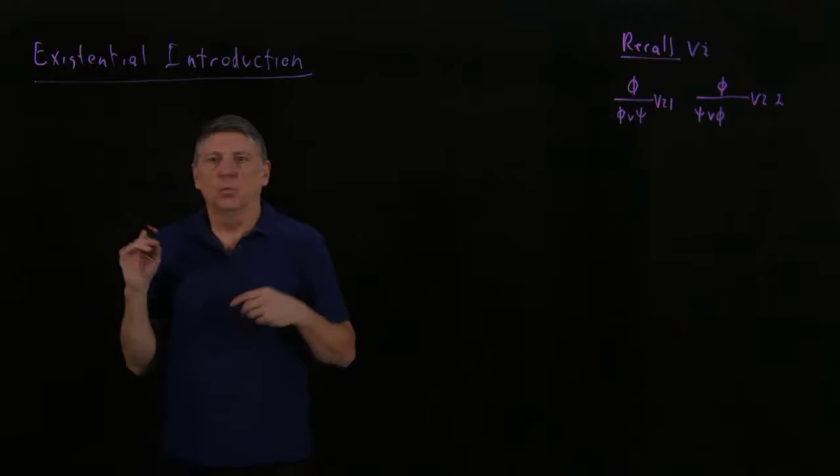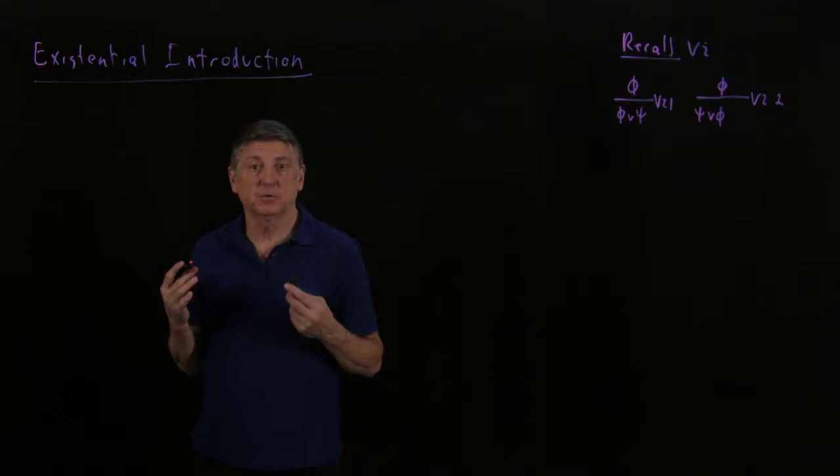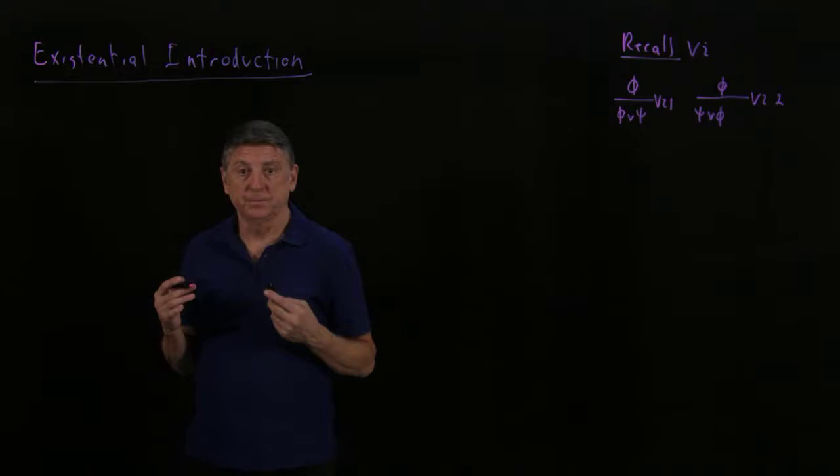Now, when we get to an existential one, what we're saying is if a statement about one object in our universe of discourse is true, then there exists an object such that that's true.